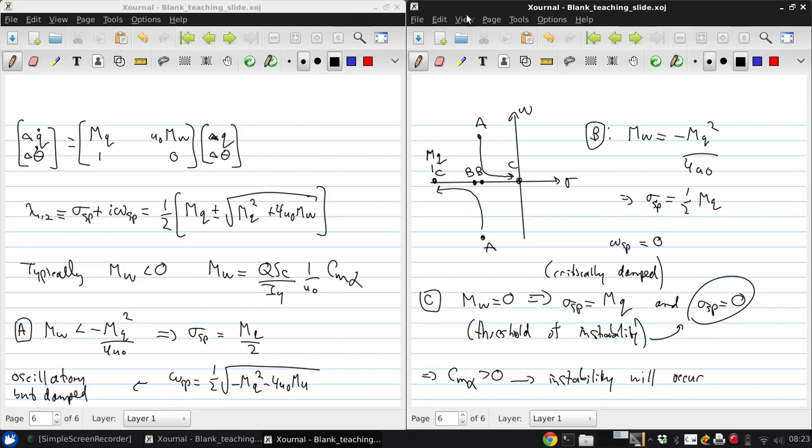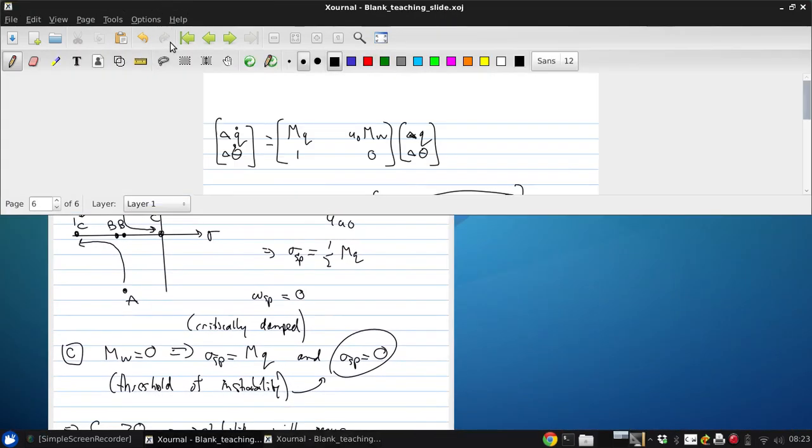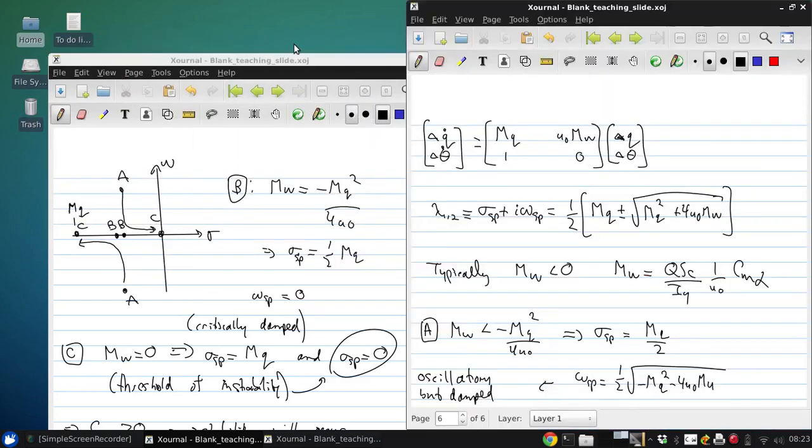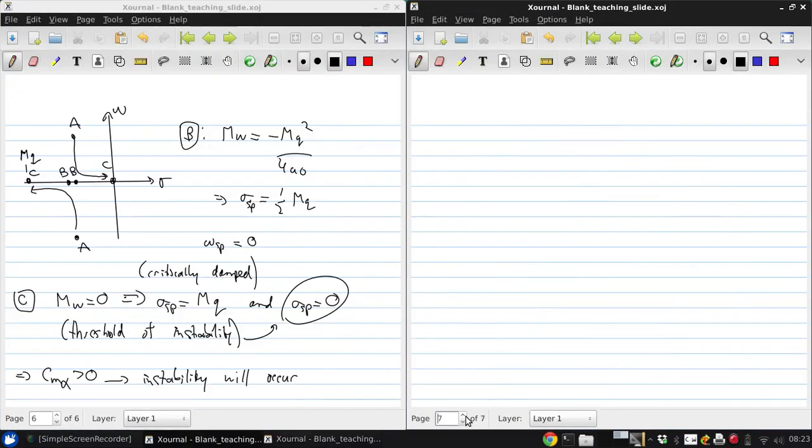But if we think about this a little bit more, we're going to be able to realize that things are not quite so simple. So remember that we assumed that the short period frequency was significantly higher than the fugoid frequency. But for C, we said that the short period frequency is zero, which is now violating this previous assumption. So what happens?